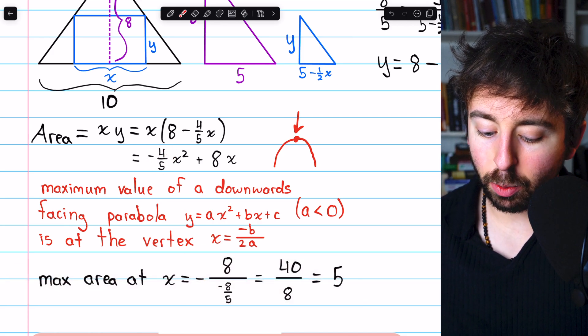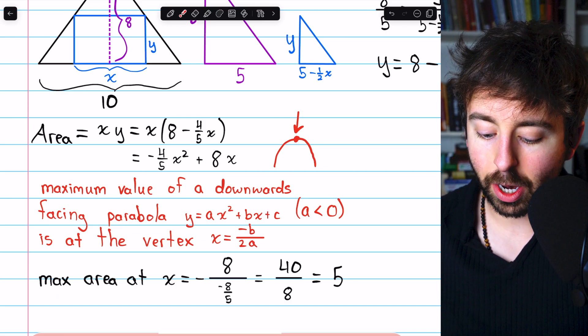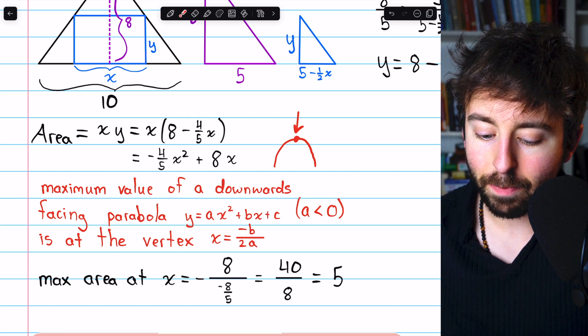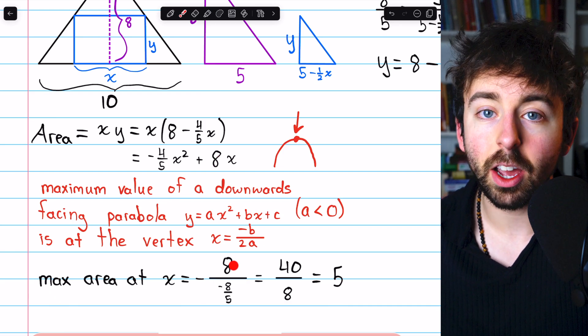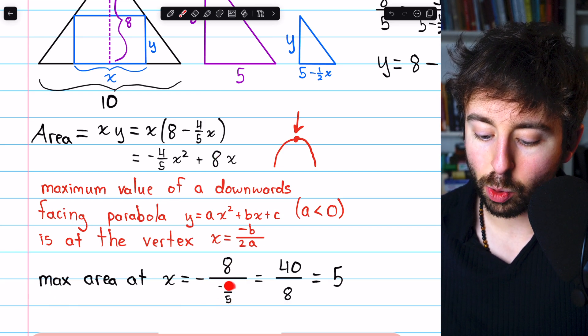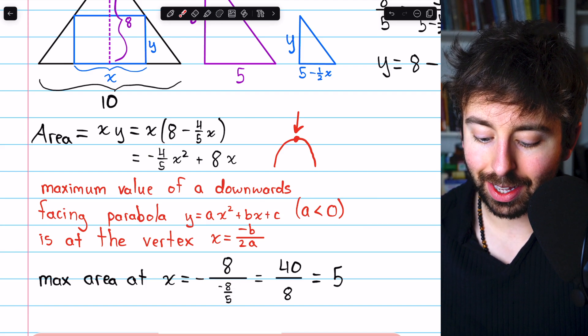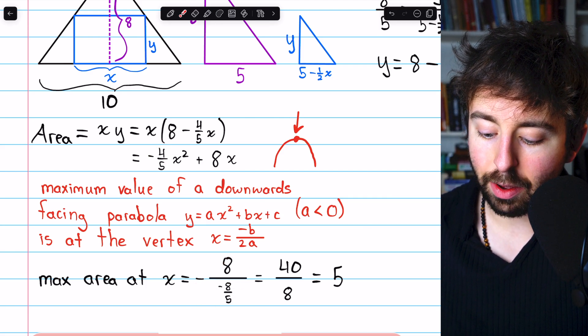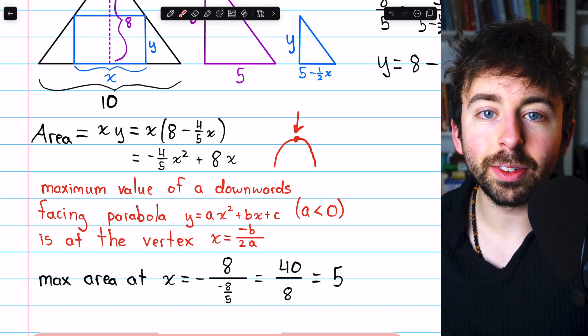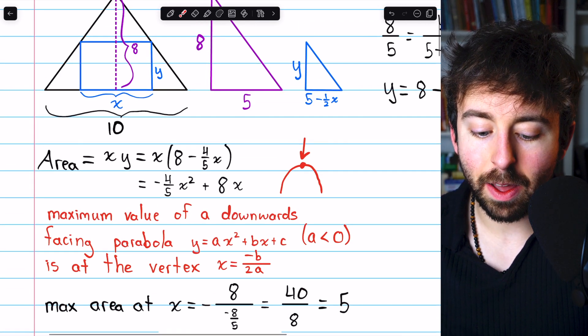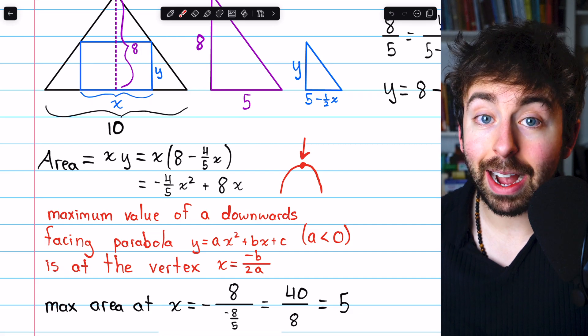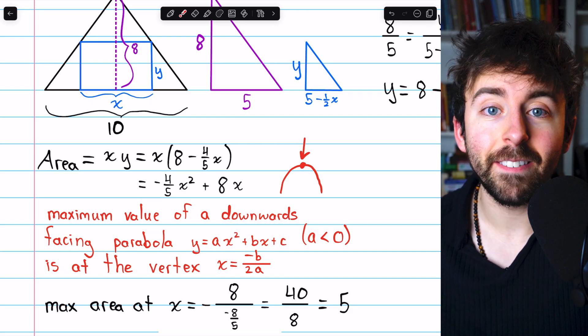Our maximum area will occur at the vertex where x is negative b, that's 8, the coefficient of the linear term, divided by 2a. a is negative 4 fifths, so 2a is negative 8 fifths. If we evaluate this, we get 40 over 8, which equals 5. So the base of our rectangle to maximize the area should be 5.